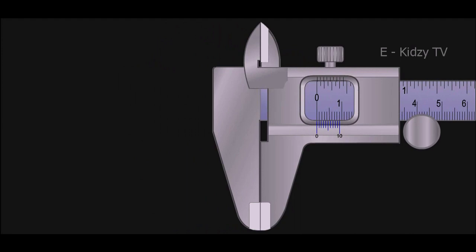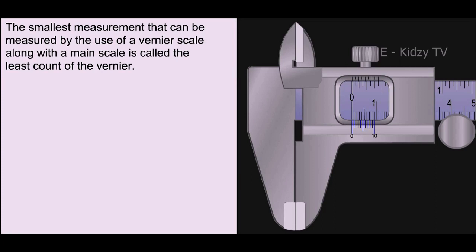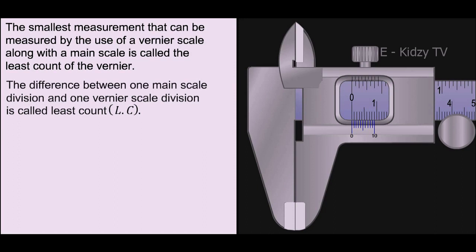The smallest measurement that can be measured by the use of a Vernier scale along with a main scale is called the least count of the Vernier. In other words, the difference between 1 main scale division and 1 Vernier scale division is called the least count or LC.